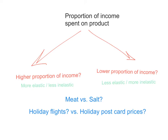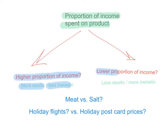The second determinant of price elasticity of demand is the proportion of income that consumers spend on the product. Generally, if a product takes up a high proportion of a consumer's income, that consumer's demand is likely to be quite sensitive to price, because the product is already expensive. So any changes in price, the consumer will be a lot more responsive — demand will be more elastic. But if a product takes a lower proportion of income and is quite cheap, demand is likely to be more inelastic.